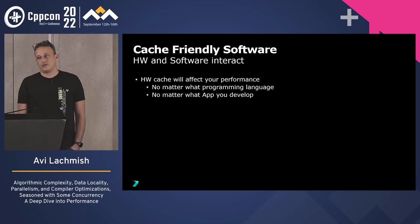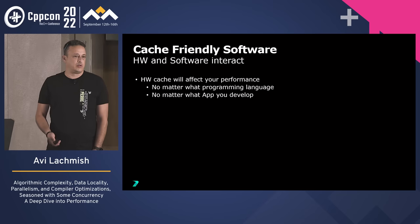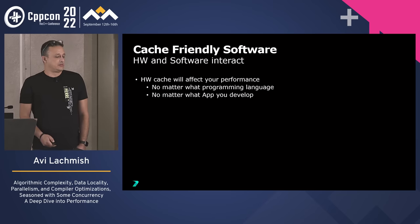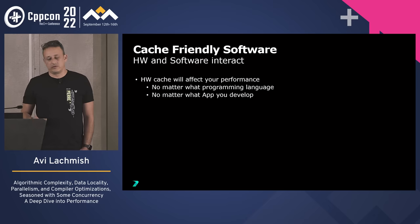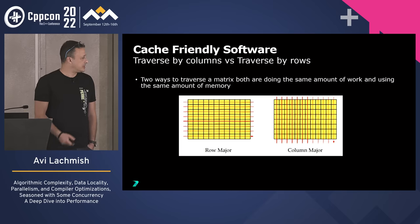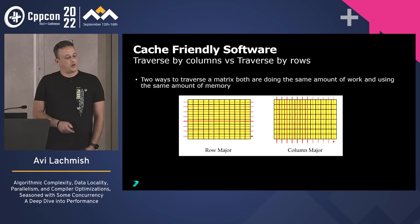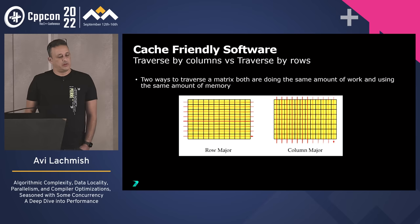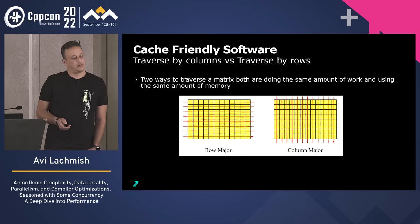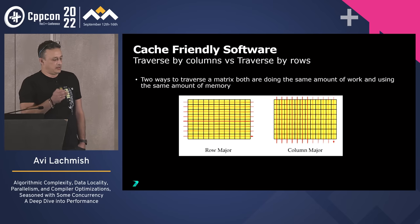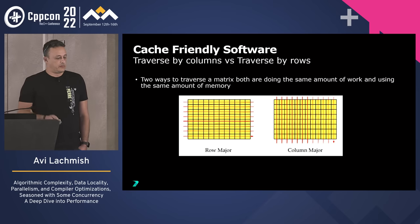It doesn't matter what kind of software you develop — at the end of the day it will run on the hardware you are actually running it on. So you should care about the hardware and understand its impact on your efficiency. Let's take an example: we have two matrices, one traversed row by row and the other column by column, doing the same kind of work — summing each element to get a result.